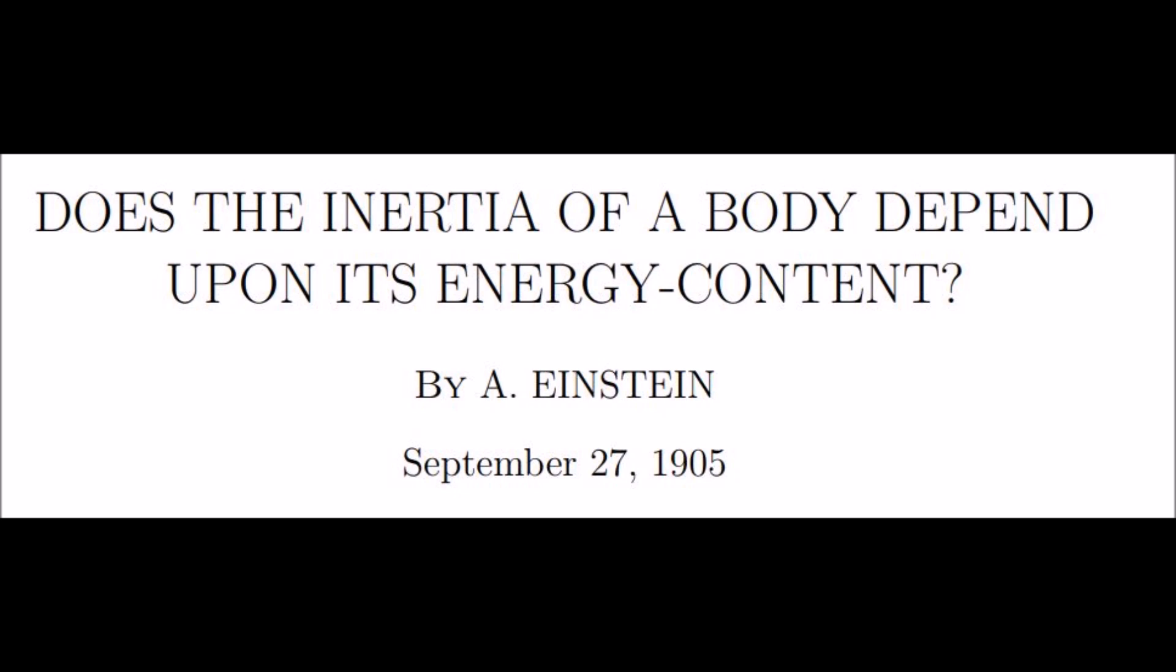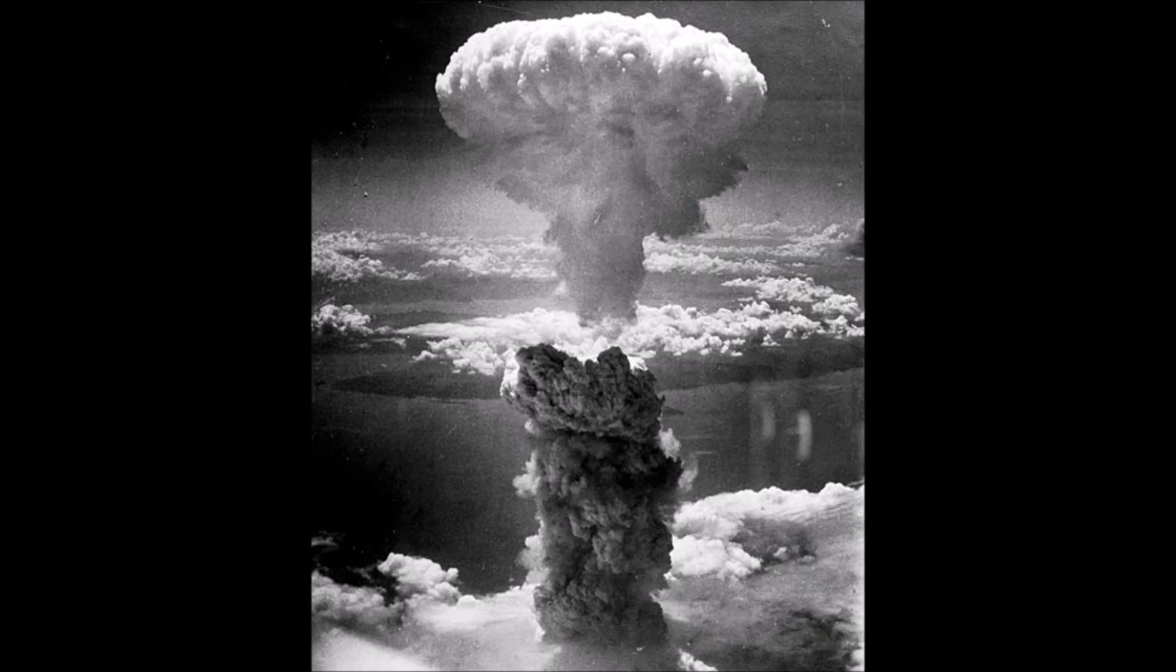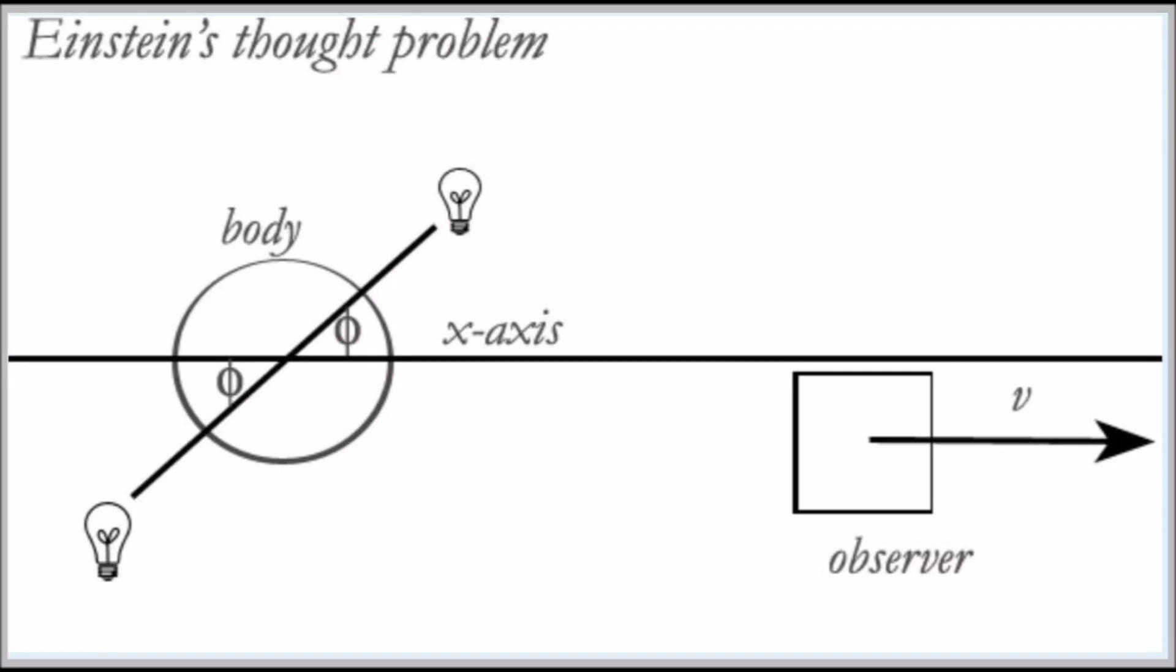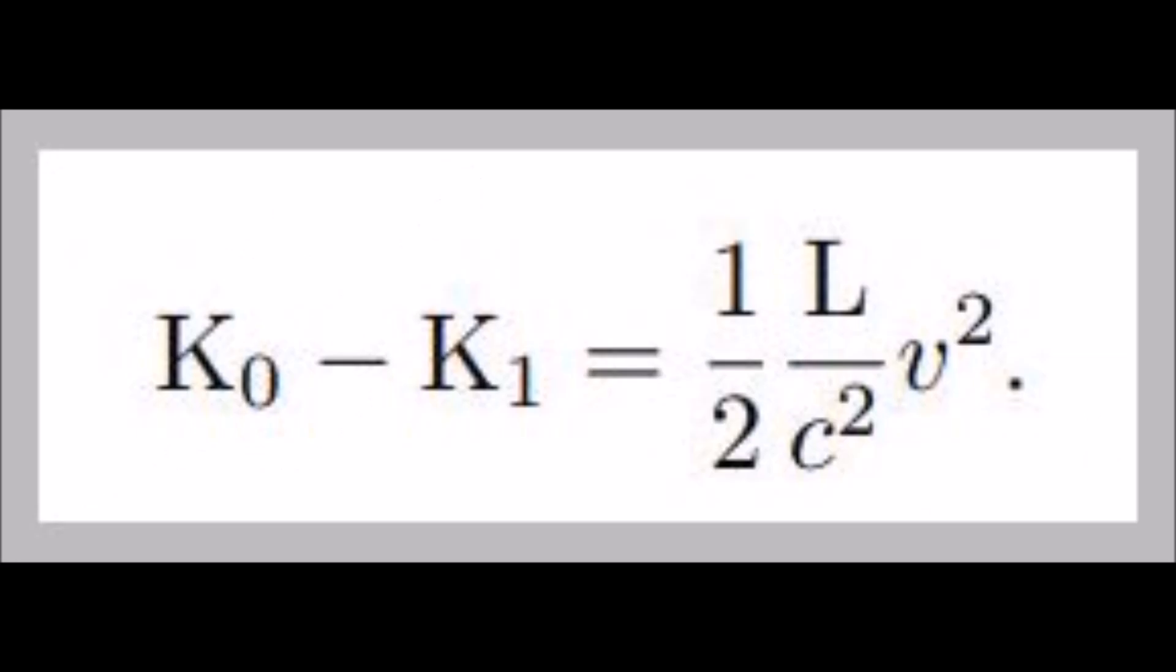The title of Einstein's paper is Does the inertia of a body depend on its energy content? Its title is of little help. Nothing about smashing atoms and nuclear war, or even matter itself. It is about light emitting from two bodies while the observer moves away from them.